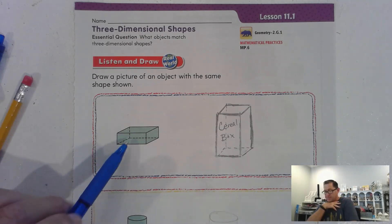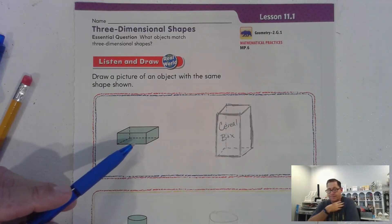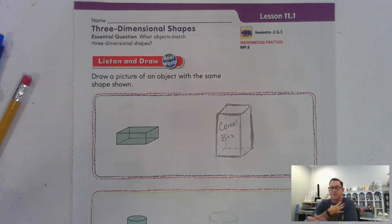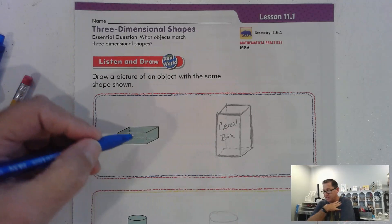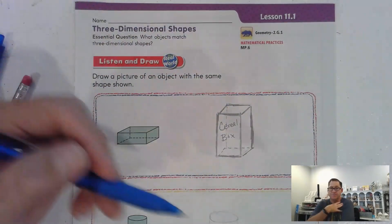So I want you to look at this first shape. It's a rectangular cube, right? And I want you to think of another object in real life that is similar to this shape. For instance, I'm going ahead and drew a cereal box.